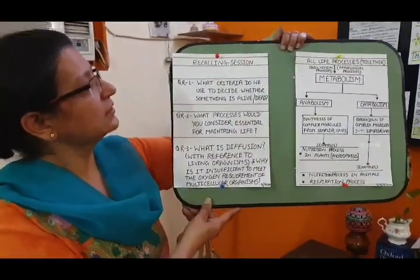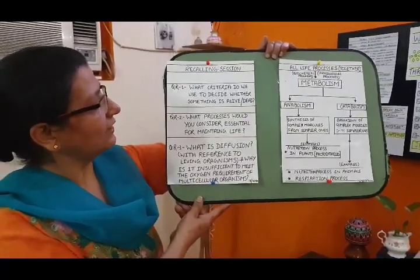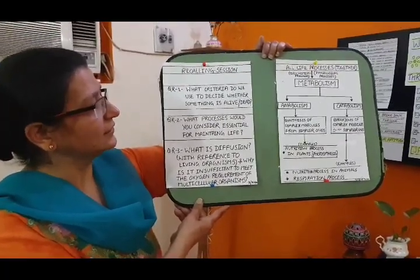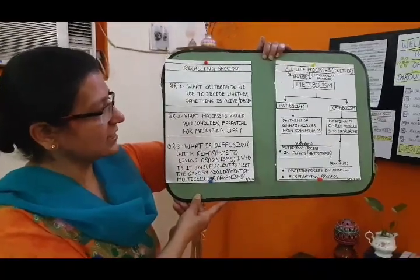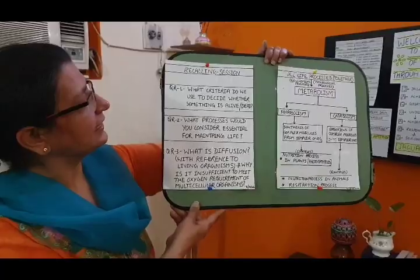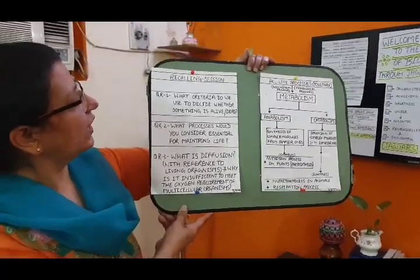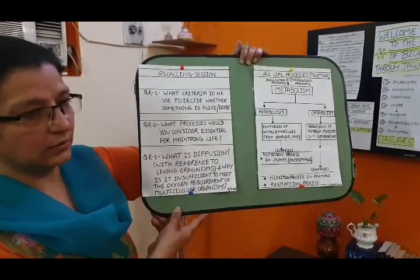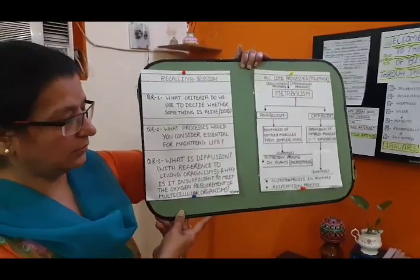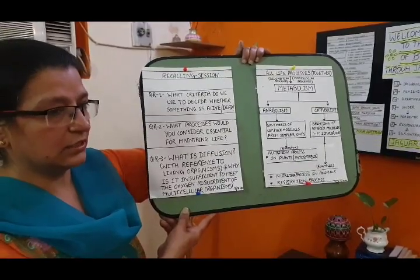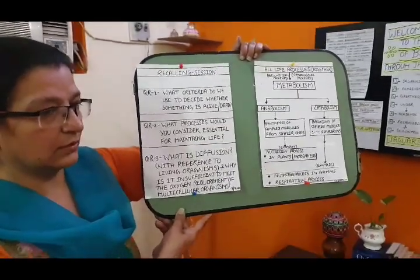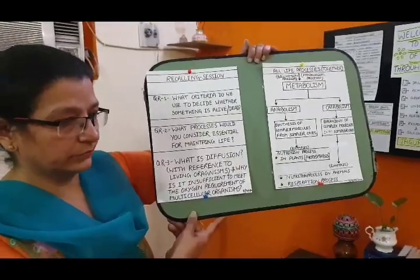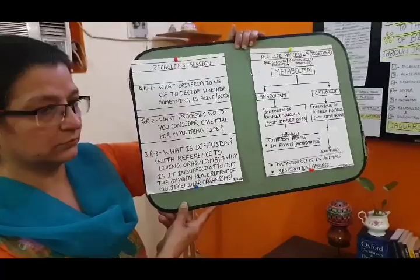I will start with a recalling session with questions related to what you learned in class 7th and class 9th. My first question is: what criteria do we use to decide whether something is alive or dead? The criteria include movement — locomotion, action of body parts, breathing, growth, maintenance and repair of cellular structures — along with performing life processes, respiration, display of growth and development, and excretion.